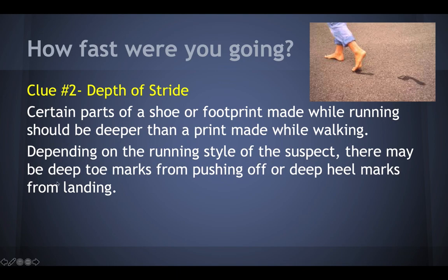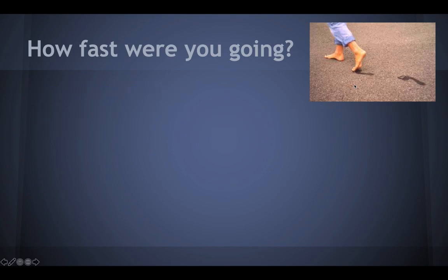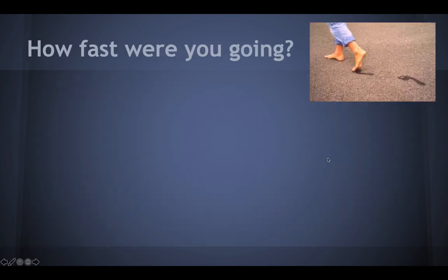Depending on the running style of the suspect, there may be deep toe marks from where you push off, or deep heel marks from where you land. We're not saying it's always the toe or always the heel — it depends on how their foot strikes the ground. By comparison, a walking print will be much clearer and more uniform. We can see this person is clearly walking — very uniform. This other one, we think they started walking and then began to run because the pattern becomes less clear.